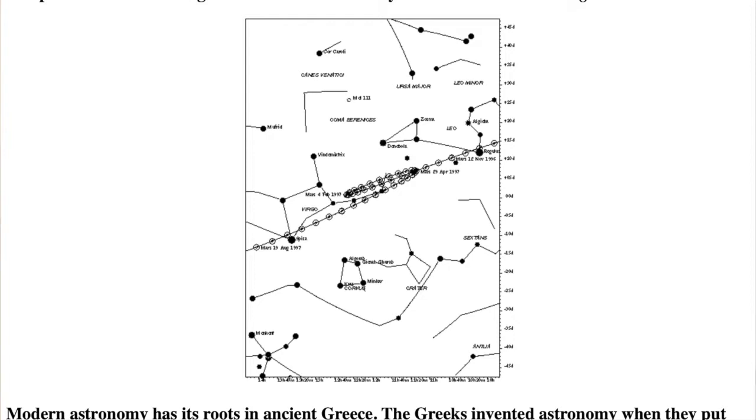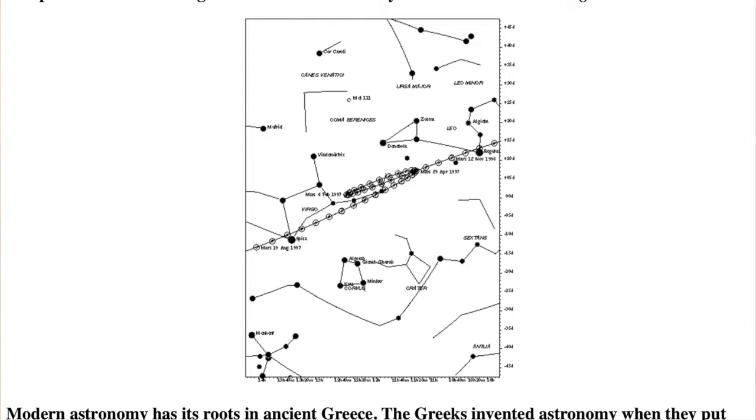Modern astronomy has its roots in ancient Greece because they invented astronomy when they put their observations together with their geometric models of the universe. Their belief that the universe is a rational place following universal natural laws, and that we are able to figure out those laws, is a bedrock foundation of science today.